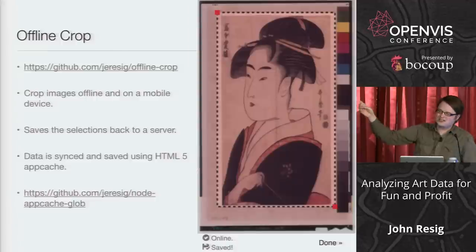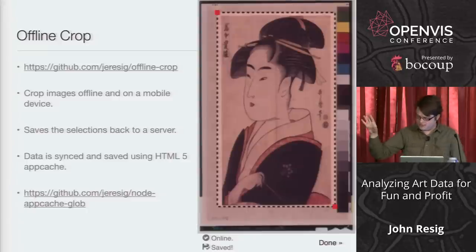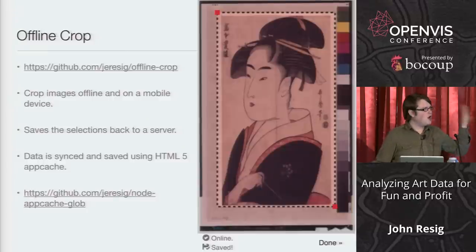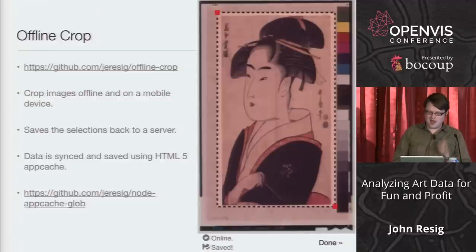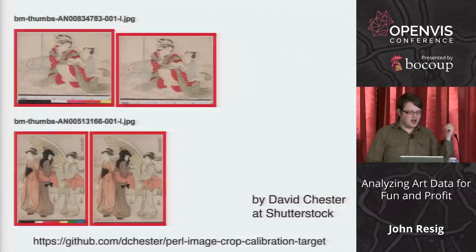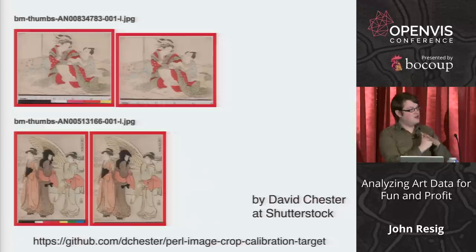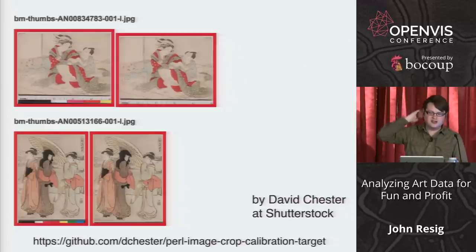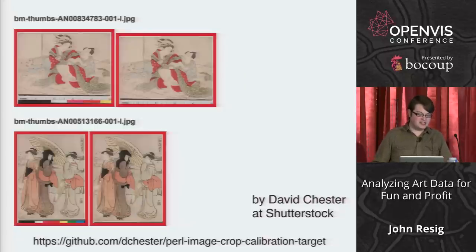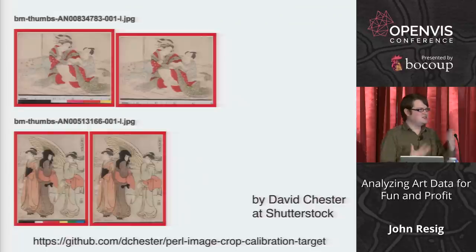This cropping application turned out to be useful for others too. I've been working with the New York Public Library and Mauricio to build an offline mobile experience for crowdsourcing. After I gave a version of this talk, someone from Shutterstock named David Chester emailed me a script that automatically detects and crops color bars off images. It works great for most cases, though there are weird edge cases where you fall back to manual cropping.